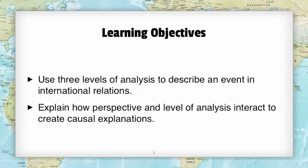The first is to use the three levels of analysis to describe events in international relations and understand how the description of events changes depending on the level at which you are attempting to describe it. The second is to explain how the different perspectives and levels of analysis interact to create the explanations that we have. Describing things is different than explaining them. The description of events is going to be relatively the same no matter what perspective you have, but the explanation is going to be different, so we will understand what it means when you make an explanation using a perspective and a level of analysis.